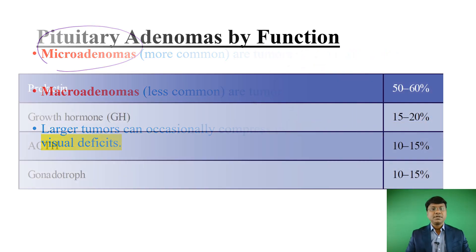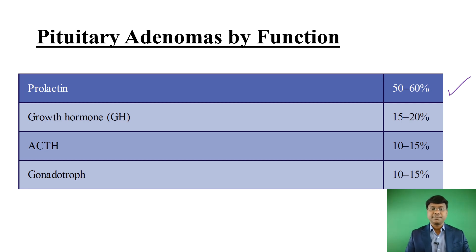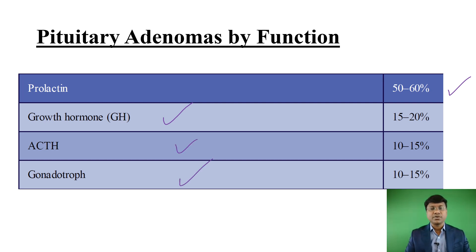Among the various pituitary adenomas, the most common secretory pituitary adenoma is prolactinoma. Prolactinomas constitute almost 50 to 60 percent of pituitary adenomas. Other types include growth hormone secreting tumors (somatotroph type), ACTH secreting tumors, and gonadotroph secreting tumors. Please remember: the most common secretory pituitary adenoma is prolactinoma.